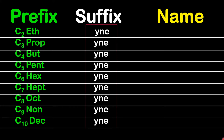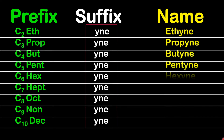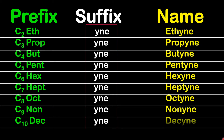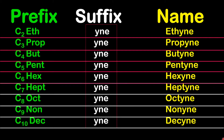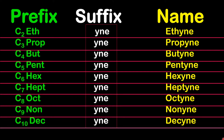Merging prefix and suffix together, our simplest alkyne is ethyne, then propyne, butyne, pentyne, hexyne, heptyne, octyne, nonyne, and decyne — up to our ten carbon atoms.